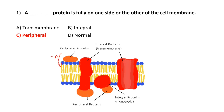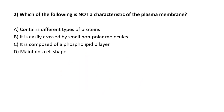The peripheral proteins are not inside the membrane. We also have integral or transmembrane proteins that go from one side to the other and can act as channels allowing molecules to pass through. There are also integral monotopic proteins that only go from the hydrophilic to the hydrophobic part without crossing completely. Summary: there are different types of proteins. The answer here is peripheral protein.